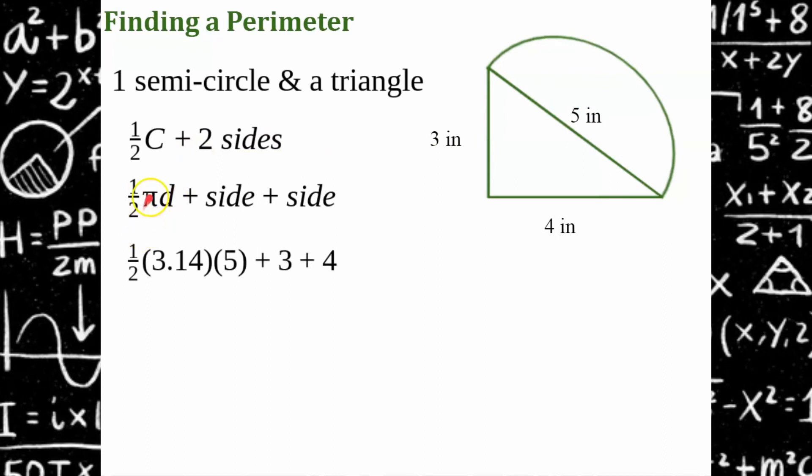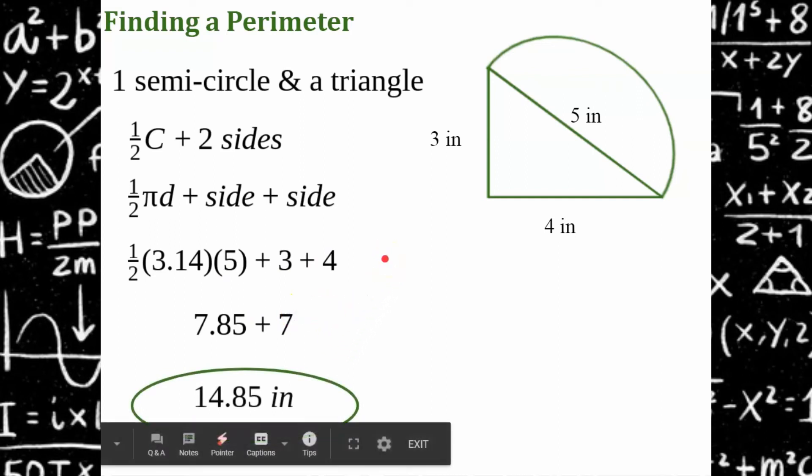So one half, replace pi with 3.14. The diameter of the semicircle is 5 and the two additional sides are 3 and 4. Multiply half times 3.14 times 5 and you'll get 7.85. Add 3 plus 4, you get 7, for a final answer of 14.85 inches.